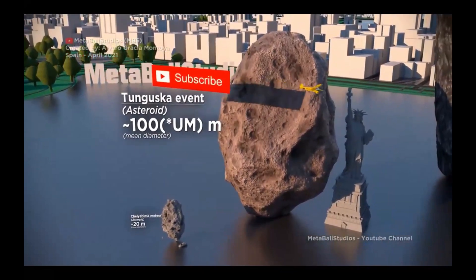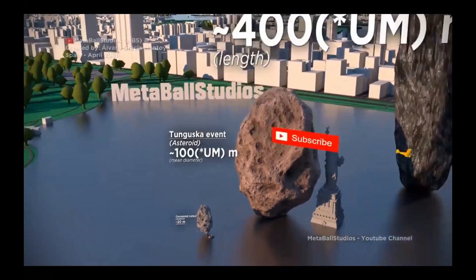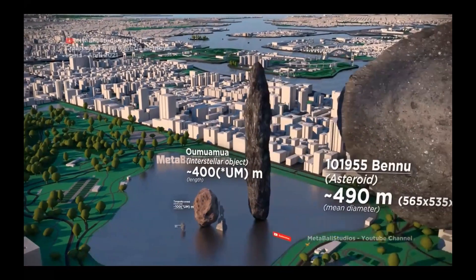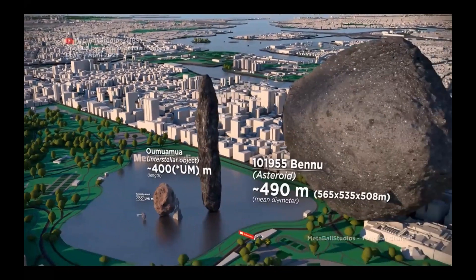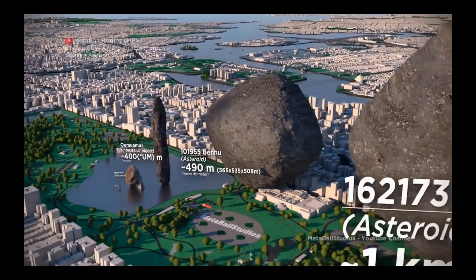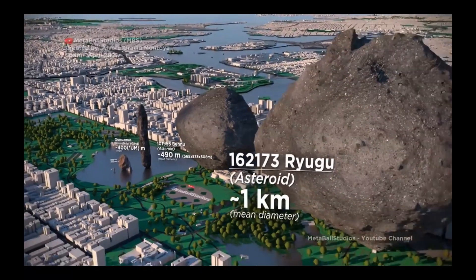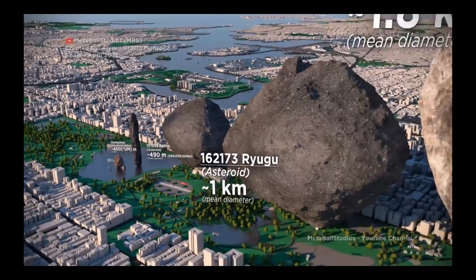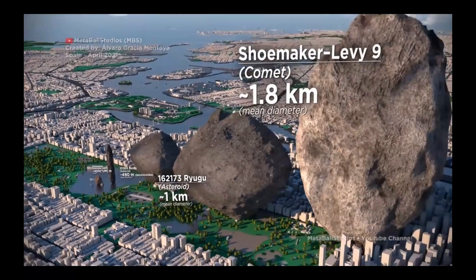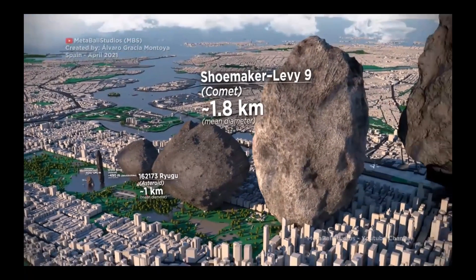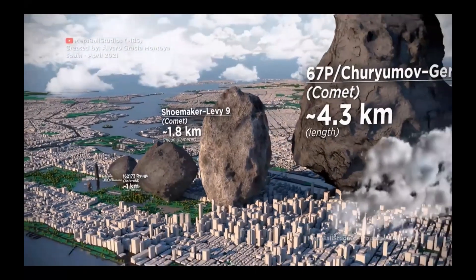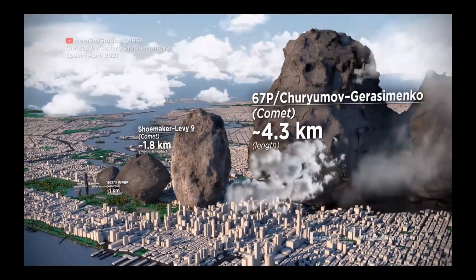Asteroids are basically rocks. The reason they're important for astrophysics is because they formed along with the solar system when the solar system formed around four and a half billion years ago. Therefore, asteroids are important astrophysically because they are remnants or leftovers of the solar system itself. Some of the asteroids which haven't had anything happen to them since then are basically a fossil record of the material from which the solar system itself formed.